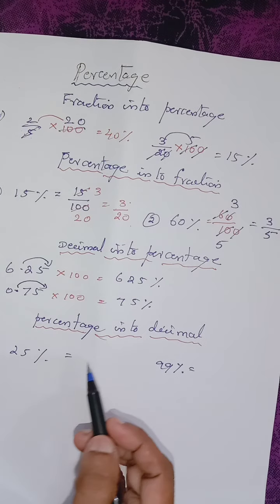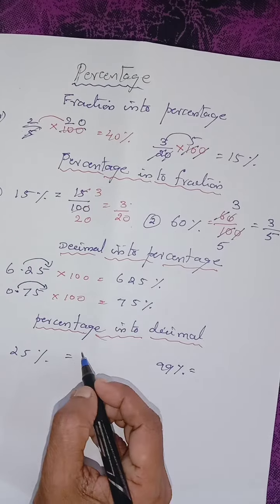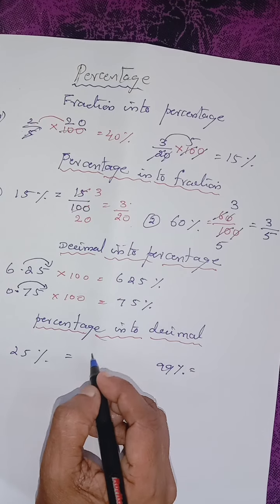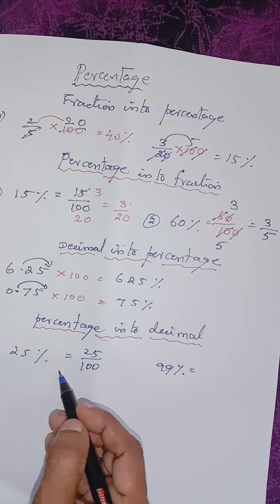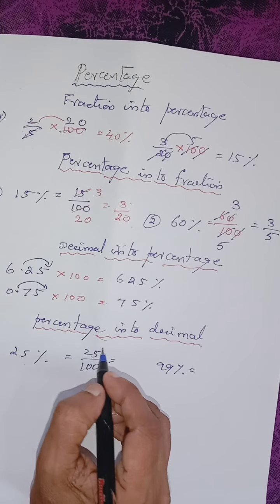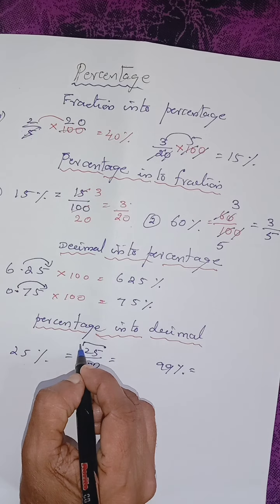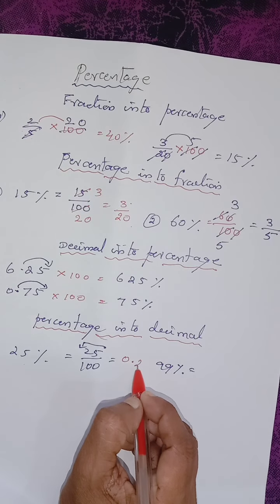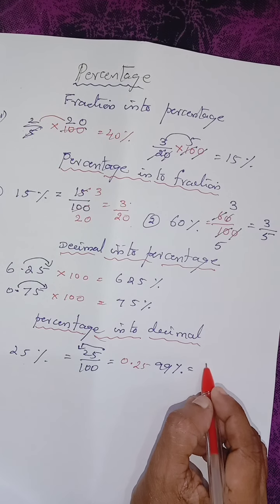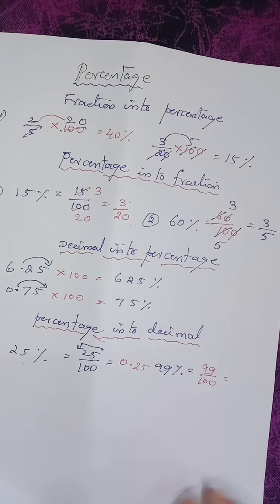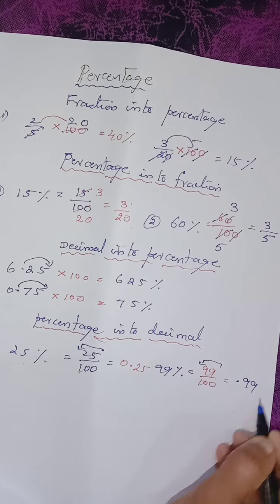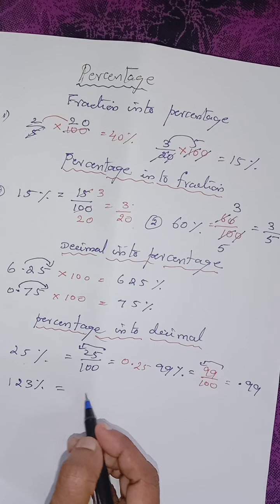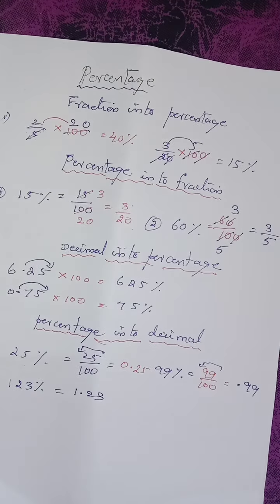Now let us see how to change the percentage into decimal — the reverse process. It is very simple. For changing into fraction we divided, so the same way we divide here also. For changing into decimal you should divide by 100. So 25 percentage means 25 by 100 — we keep the decimal point two digits before, giving 0.25. For 99 percentage, two numbers before gives 0.99. And if it is 123 percentage, then the decimal point gives 1.23.